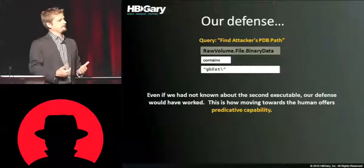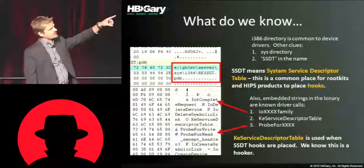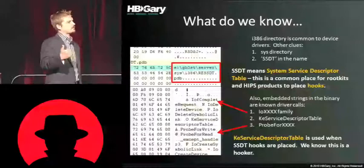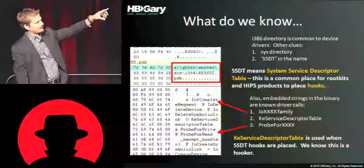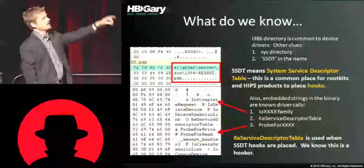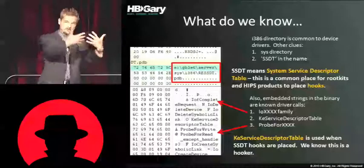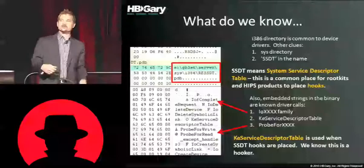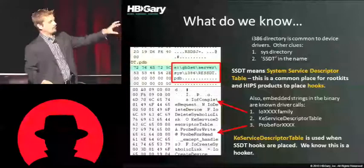Whenever you see an I386 sys file, you're dealing with a kernel mode driver. I see ssdt, so I think it's a kernel mode driver messing around with the SSDT, which is a pretty common way rootkits are written. Dropping strings further, I also see IOF complete request, which closes out an IRP packet going in and out of the kernel; ke-service-descriptor-table, the exported name for the SSDT; and probe-for-read and probe-for-write — functions only used in the kernel, specifically when kernel mode code is manipulating user-space memory. I didn't have to look at any disassembly to figure out these capabilities.